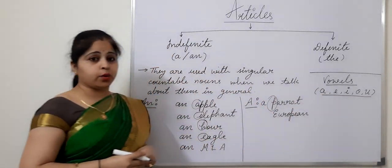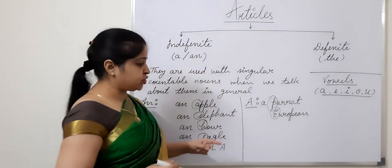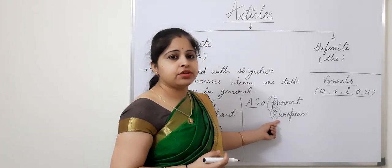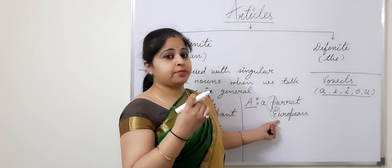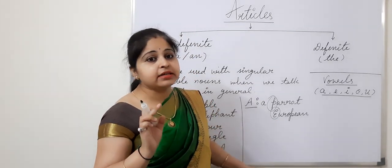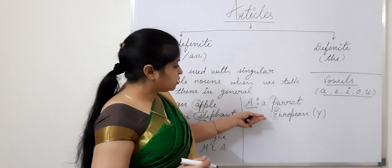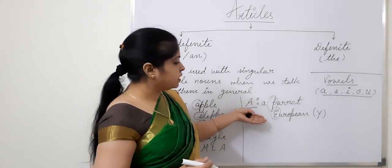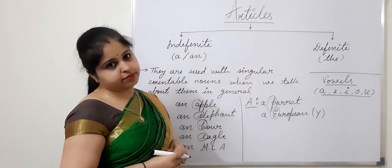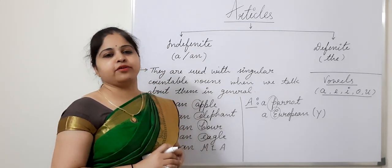Next example: 'European'. This word is beginning with a vowel E, but when we pronounce it — European — it is pronounced with the sound of the consonant Y. So this word will take 'a' before it: a European. Because of having a consonant sound at the very beginning of its pronunciation.